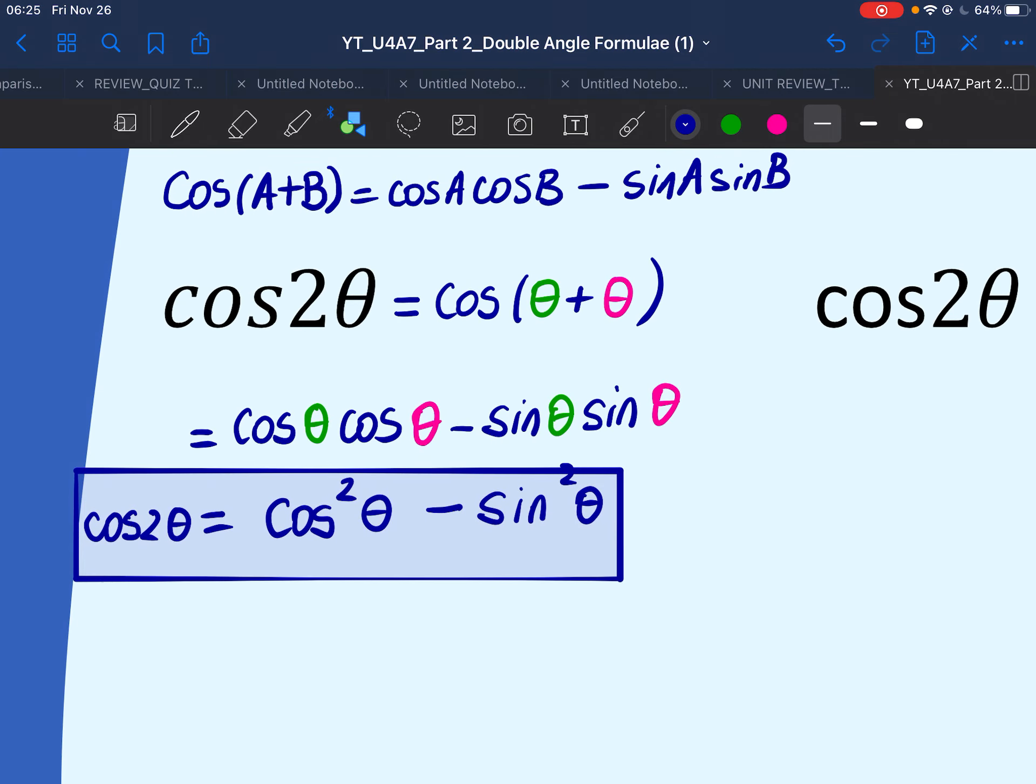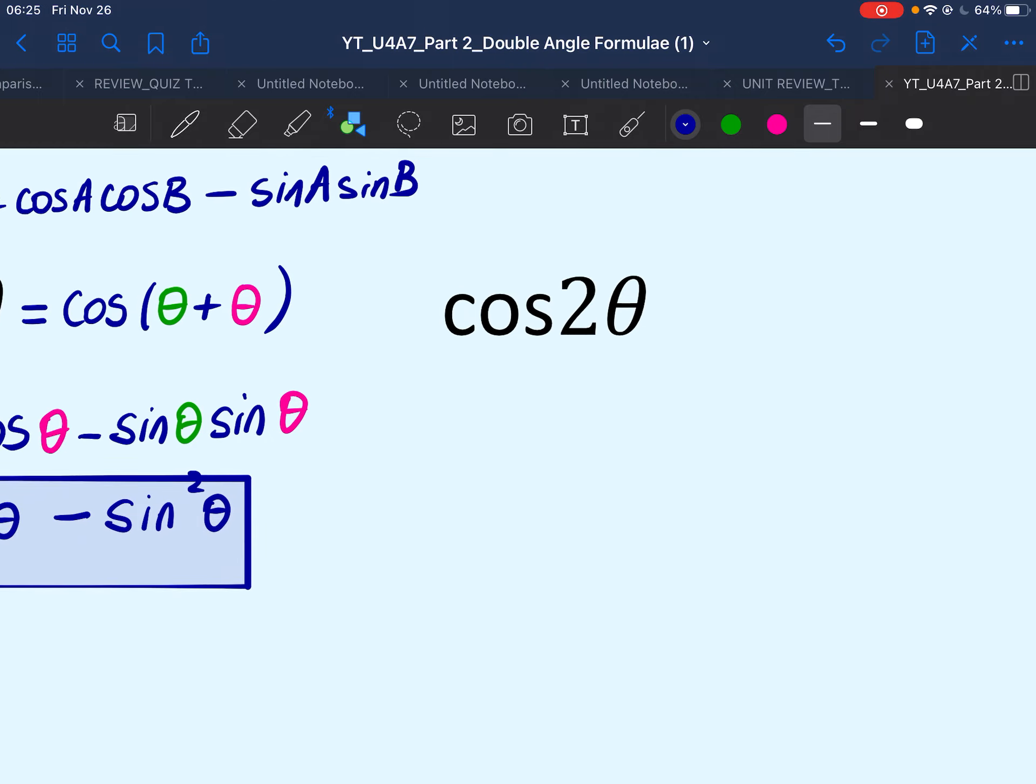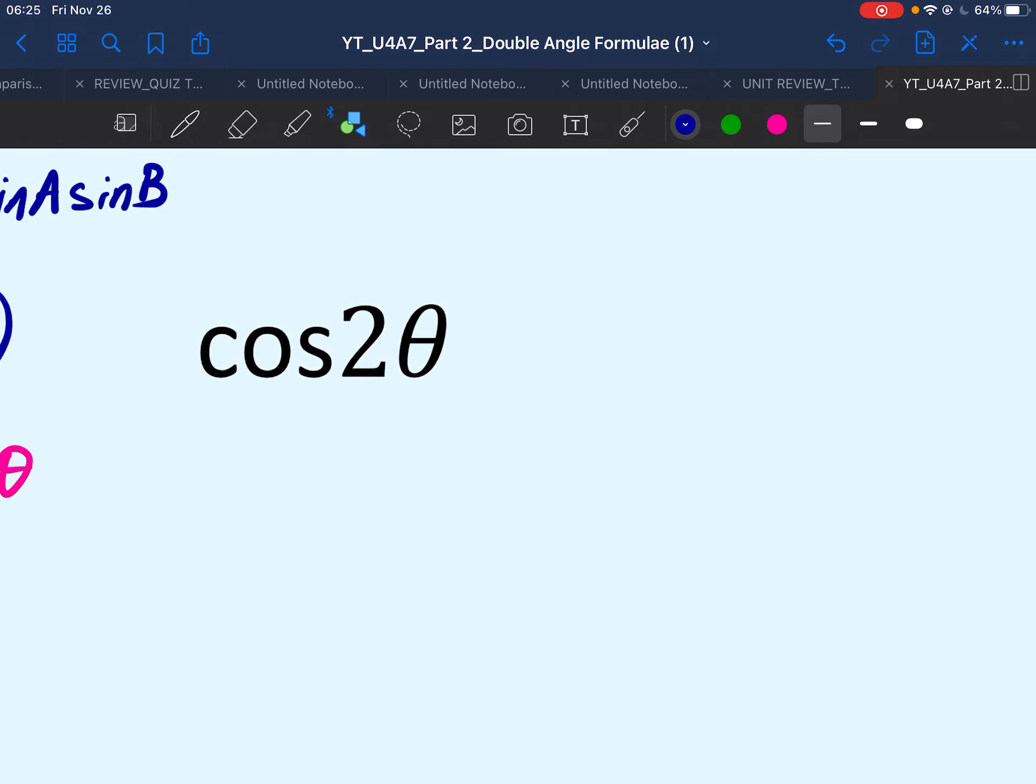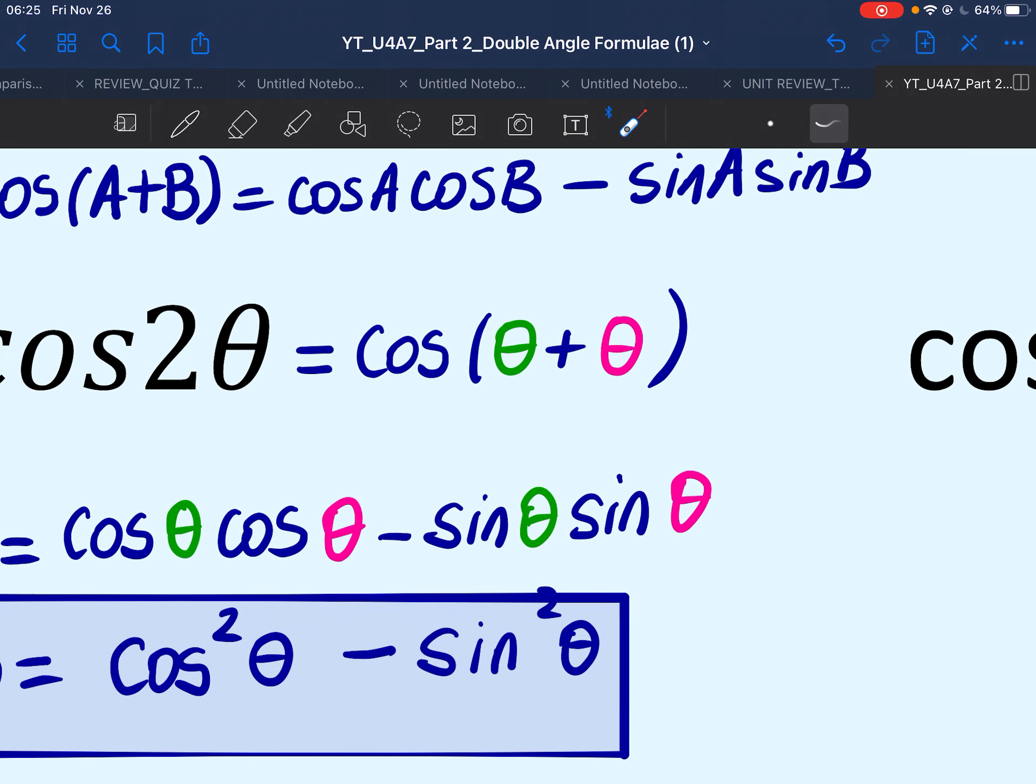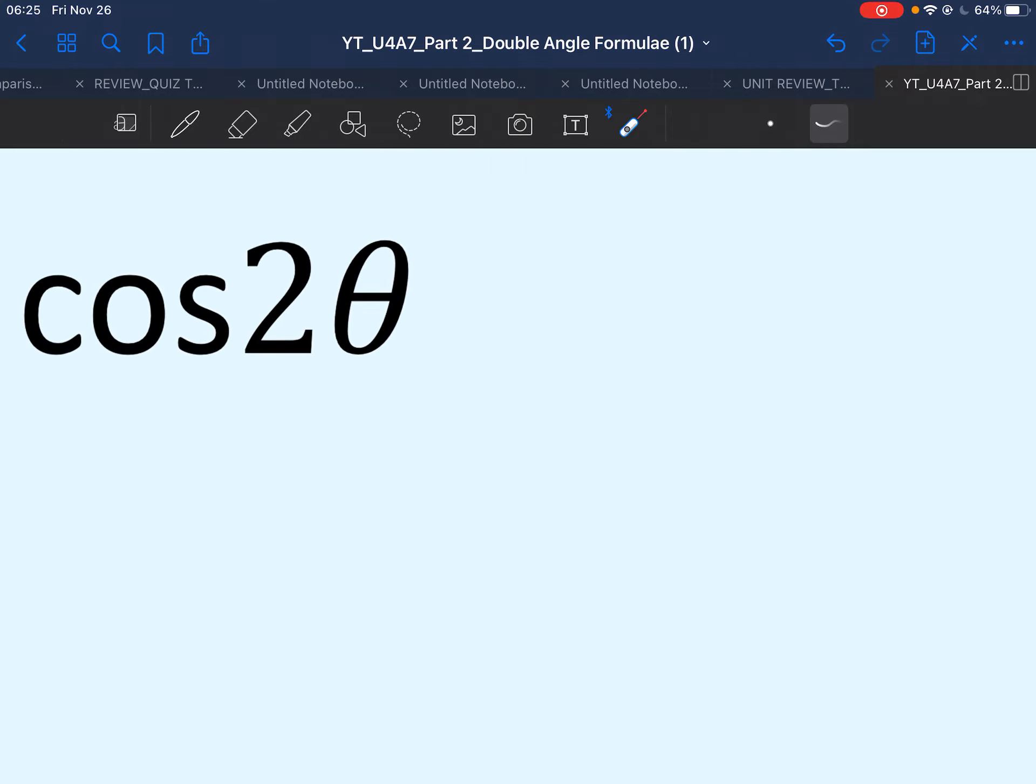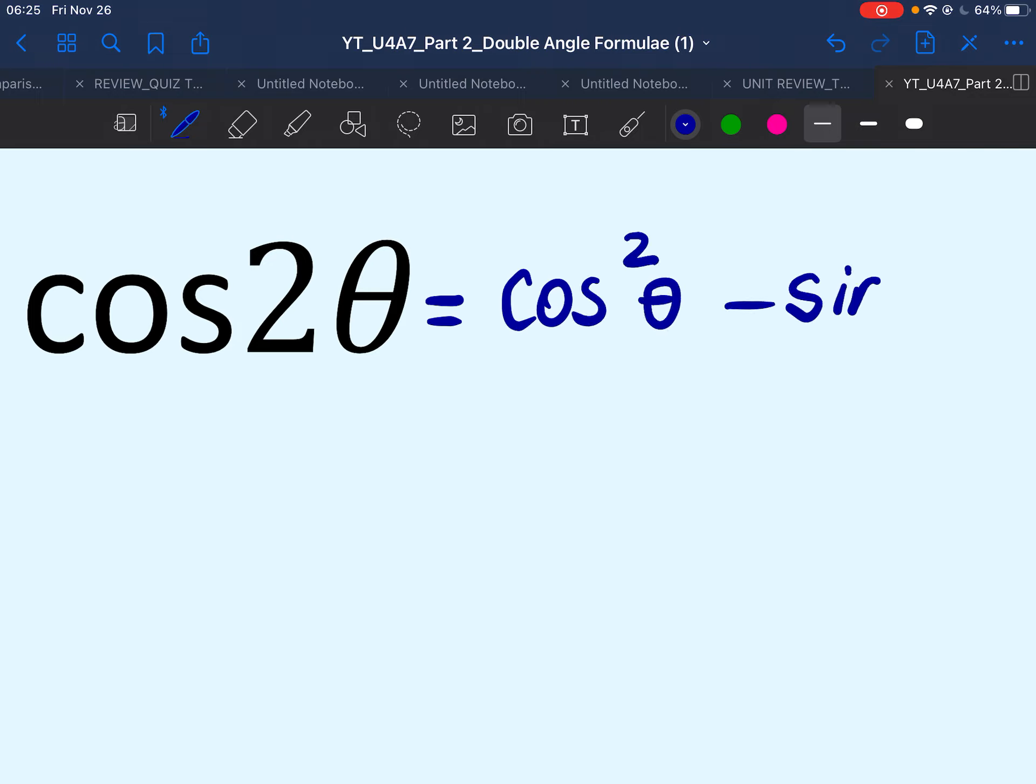Now we're going to move on to the next formula for cos 2 theta. And here is a little secret about it. Now all the formulas for cos 2 theta will come from this basic formula that we just proved. So I will rewrite the same formula we just proved. So that's cos square theta minus sine square theta.